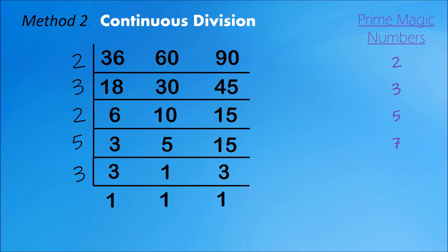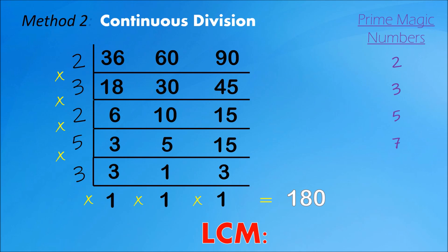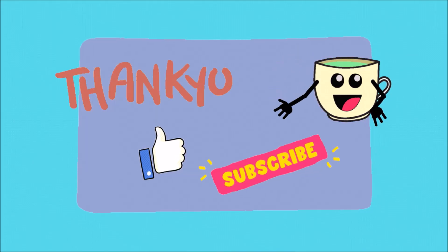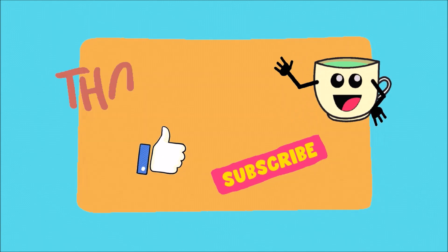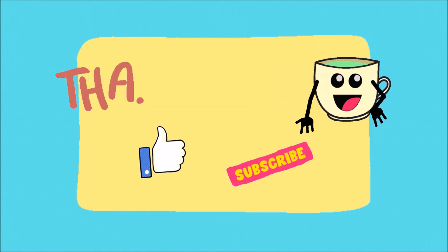For the next step, multiply all the numbers outside the ladder: 2 times 3 times 2 times 5 times 3 times 1 times 1 times 1 is equal to 180. Therefore, the LCM for 36, 60, and 90 is 180. There you have it! I hope you learned something today. If you like our discussion, please like and subscribe. Thank you, and see you again next time!